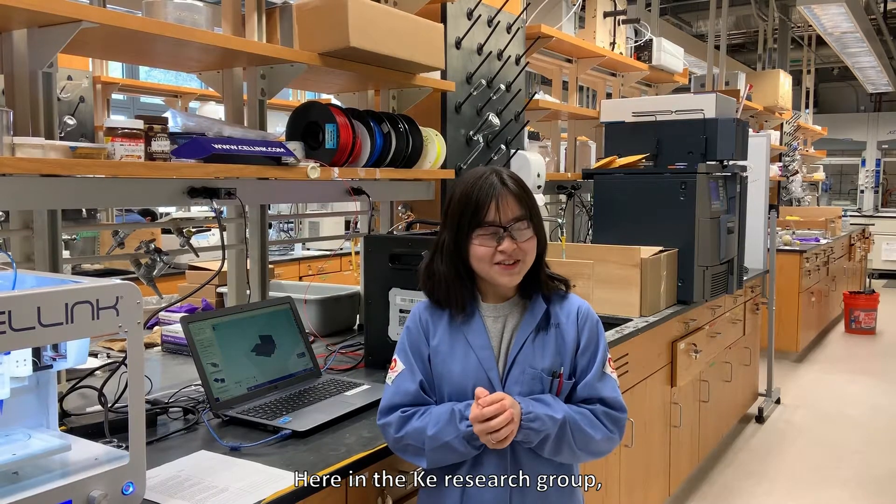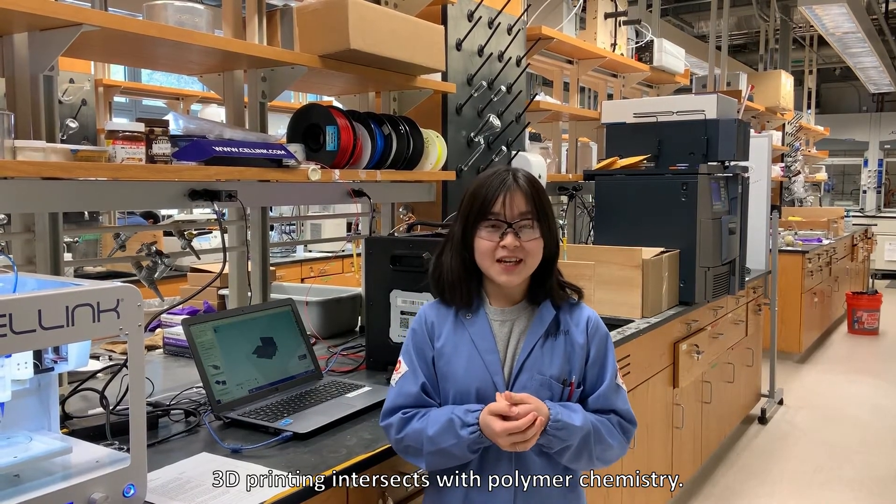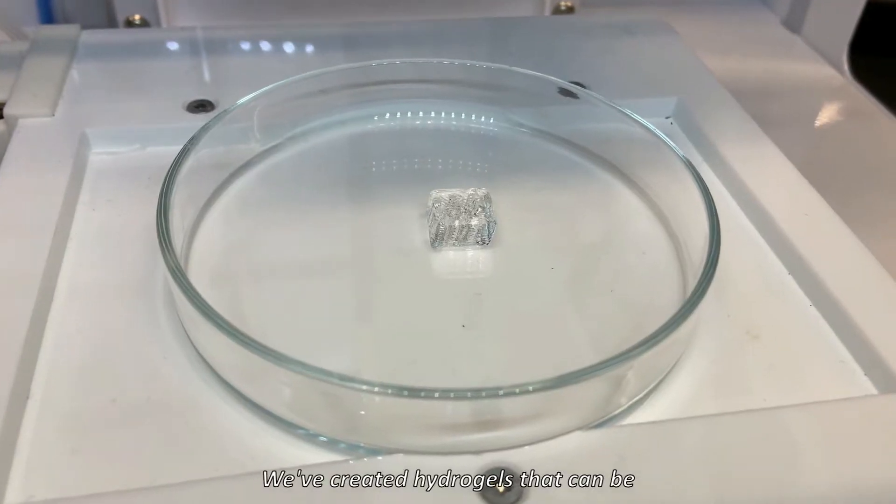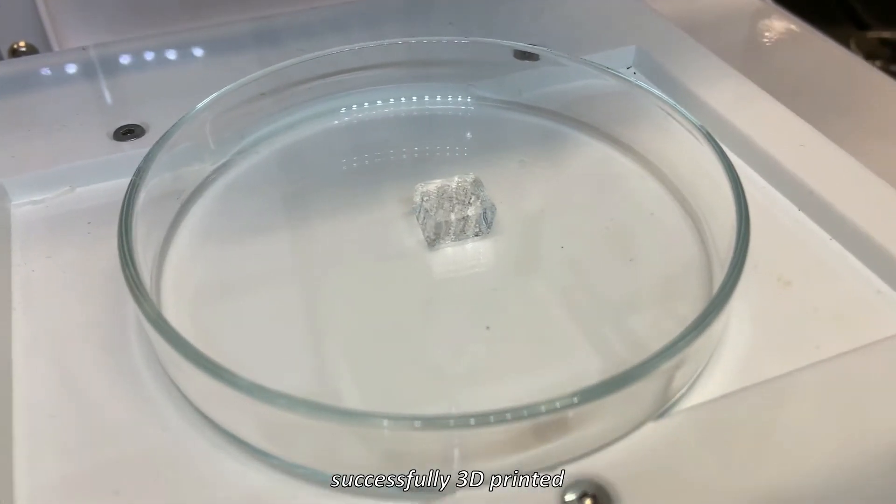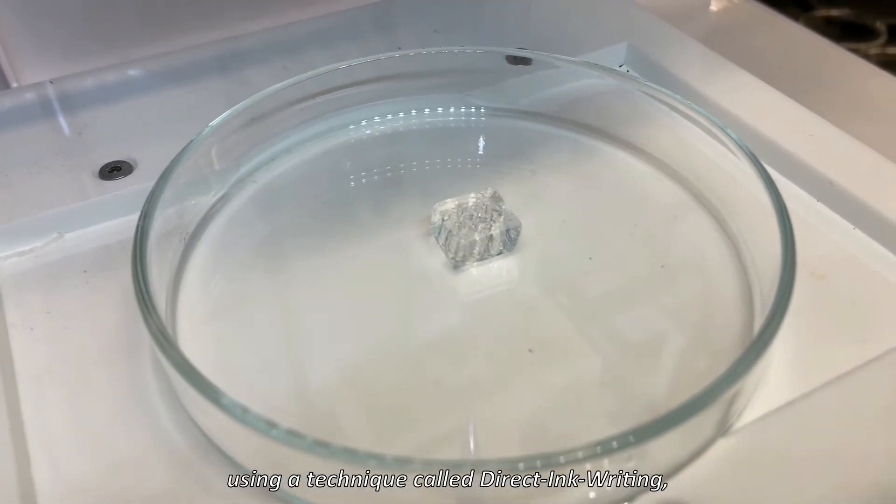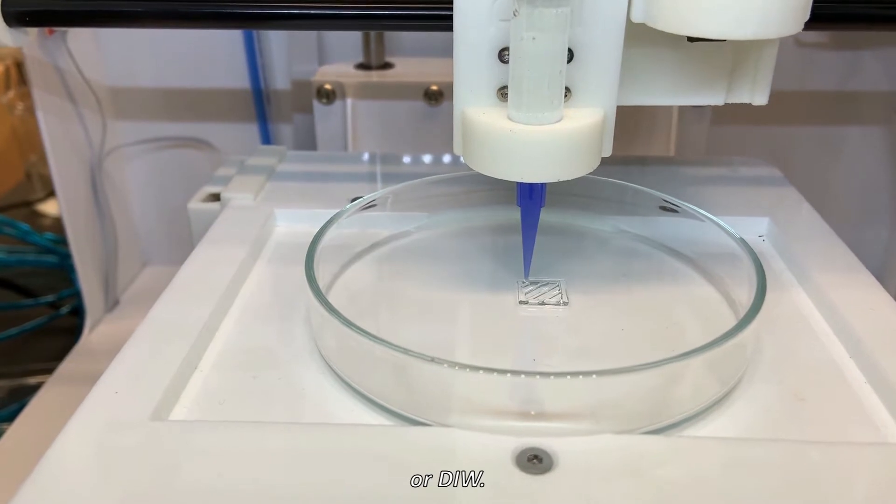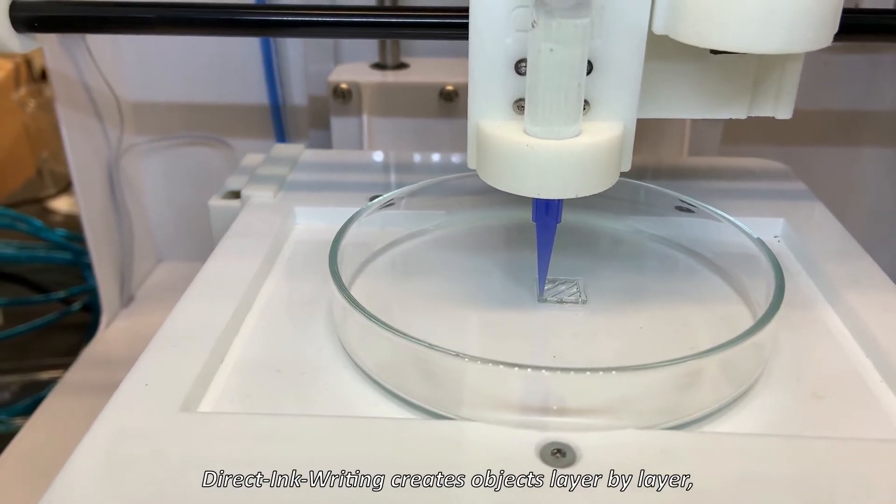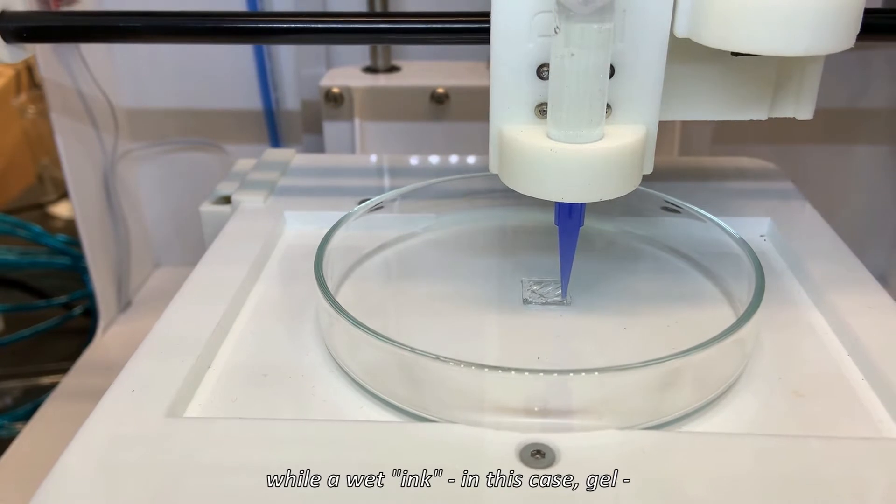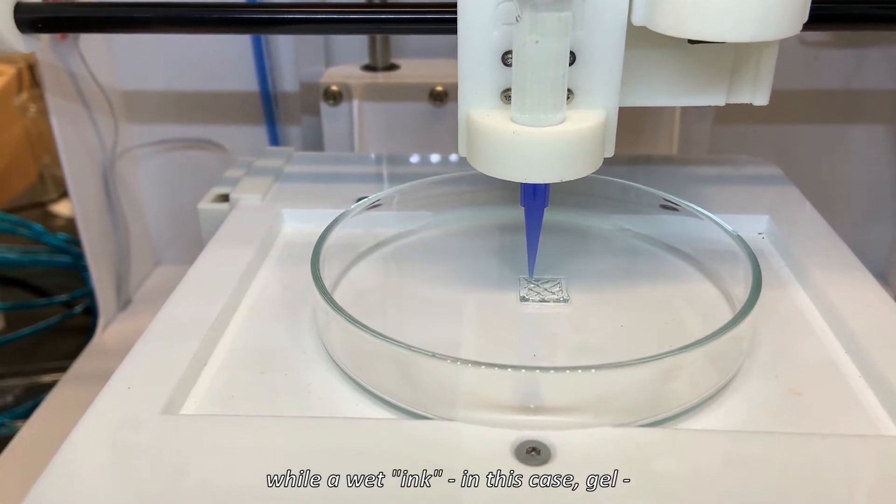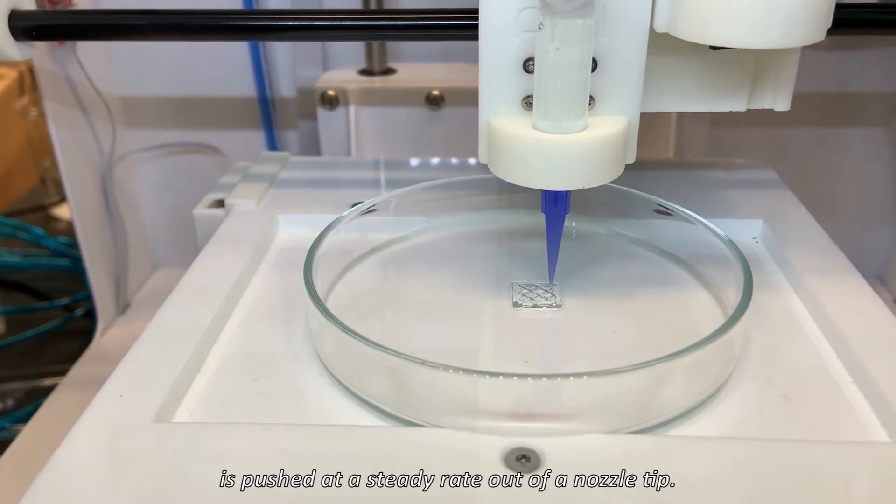Here in the co-research group, 3D printing intersects with polymer chemistry. We've created hydrogels that can be successfully 3D printed using a technique called direct ink writing, or DIW. Direct ink writing creates objects layer by layer, while a wet ink, in this case gel, is pushed at a steady rate out of a nozzle tip.